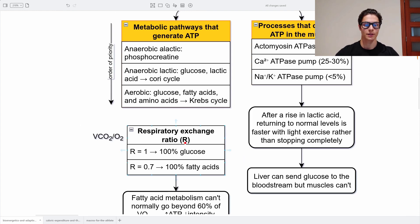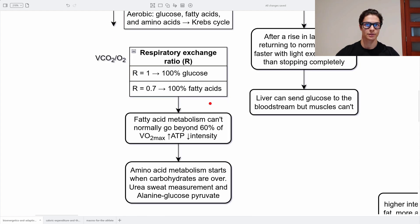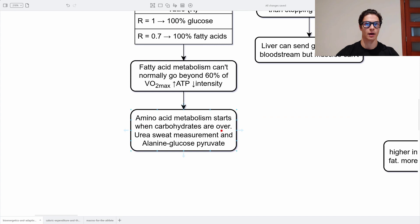The respiratory exchange ratio is the volume of CO2 created divided by the oxygen levels we have. When R is 1, it means we are using 100% glucose as an energy source — this is probably the anaerobic lactic pathway or the first part of aerobic using only glucose. When we deplete our glycogen stores, we start using fatty acids, and the respiratory exchange ratio goes from 1 to 0.7, meaning 100% fatty acids. In reality it's a mix of the two, and fatty acid metabolism can't normally go beyond 60% of VO2 max — they create more ATP per molecule but performance tends to be lower. Amino acid metabolism starts when carbohydrates are finished, and we can check this by using a urea sweat measurement — if there is a lot of urea in the sweat, we are using amino acids as an energy source to create glucose.